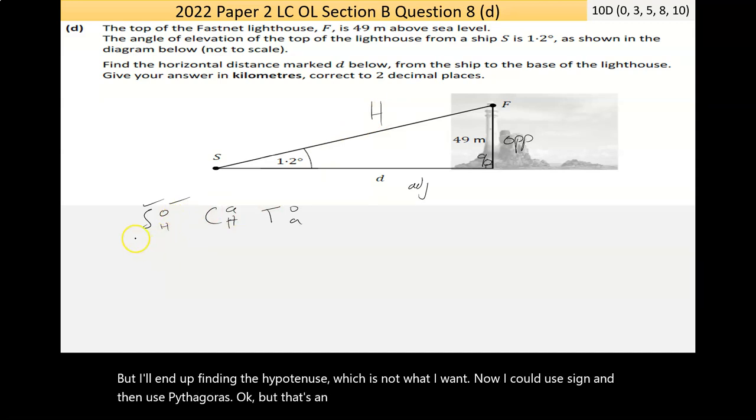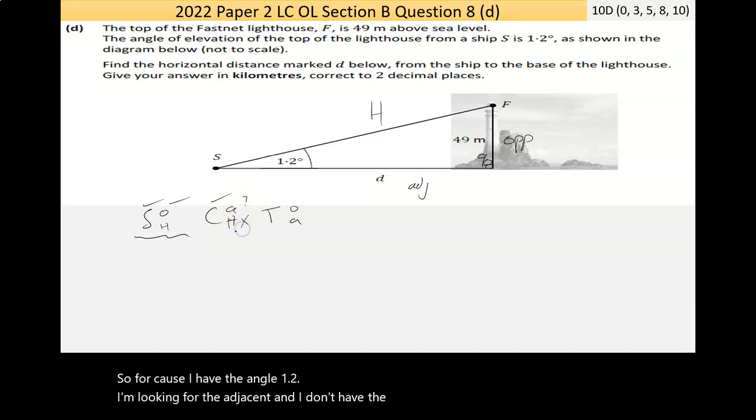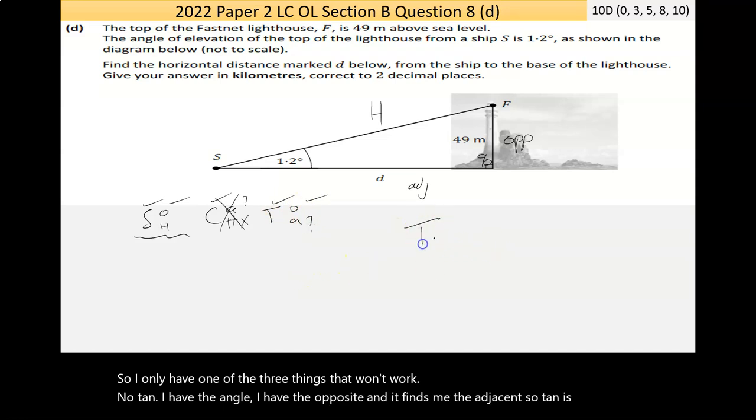So, for cos, I have the angle, 1.2. I'm looking for the adjacent and I don't have the hypotenuse. So, I only have one of the three things that won't work. Now, tan, I have the angle, I have the opposite, and it finds me the adjacent. So, tan is the best bet here.